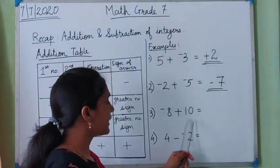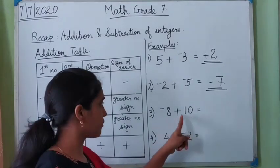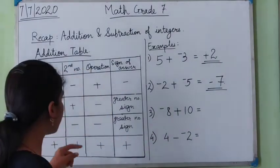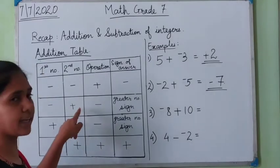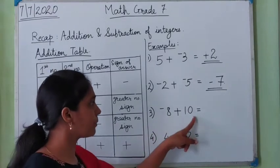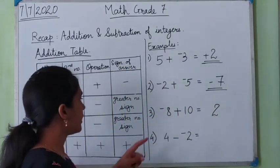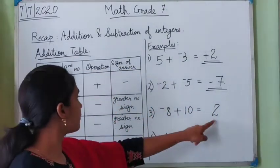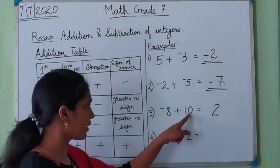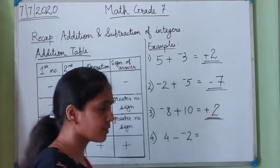In the third example, the first number is negative 8 and the second number is positive 10 — it has no sign, so it is positive. First number is negative and second number is positive, so we subtract: 10 minus 8 is 2. Now check the greater number — from 8 and 10, the greater is 10. The sign of 10 is positive, so your answer will be positive 2.